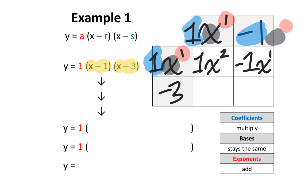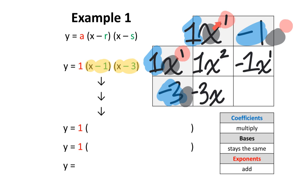We repeat the process by multiplying negative 3 by x. The coefficient here is positive 1 and the coefficient over here is negative 3. Multiplying them gives you negative 3. For the base, it's the variable x here, and there is no base on the other term, so we rewrite x. The exponent here is 1, and since there is no base on the other term, that exponent of 1 stays the same. The result is negative 3x to the power of 1.